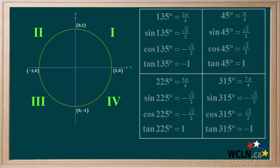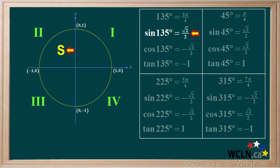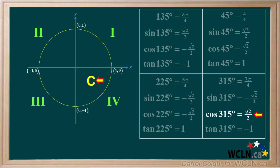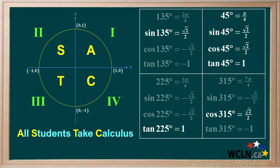We'll number the quadrants 1, 2, 3, and 4, starting at 1 and moving counterclockwise around the circle. In quadrant 1, sine, cosine, and tangent are all positive — we write 'A' for all. In quadrant 2, only the sine is positive, so we write 'S' for sine. In quadrant 3, only the tangent is positive, so we write 'T' for tangent. In quadrant 4, only the cosine is positive, so we write 'C' for cosine. We can remember this going counterclockwise with the sentence: 'All Students Take Calculus.'